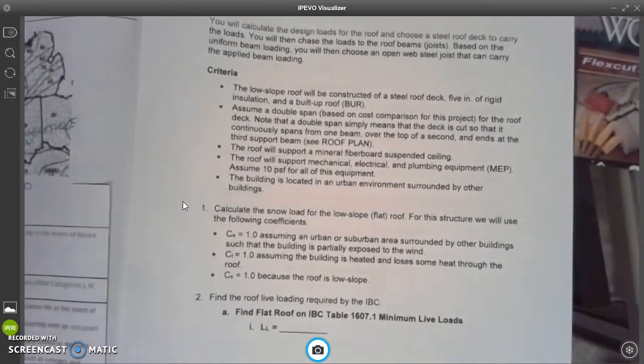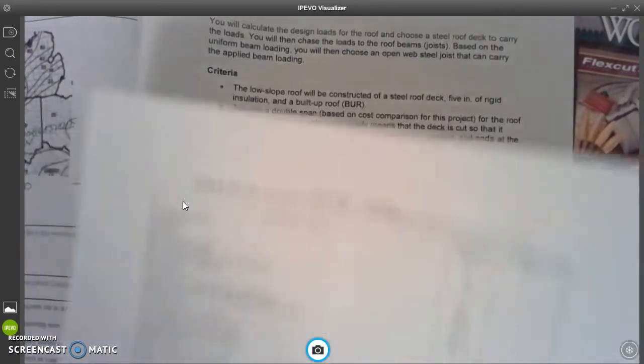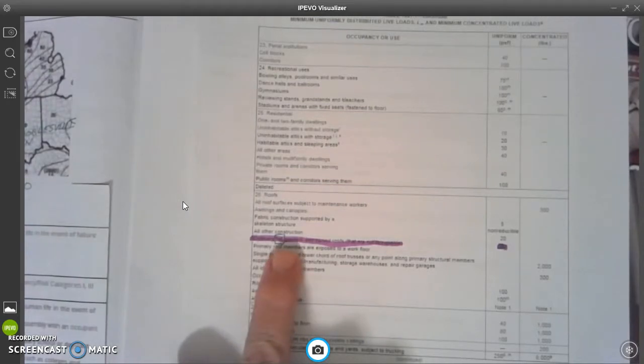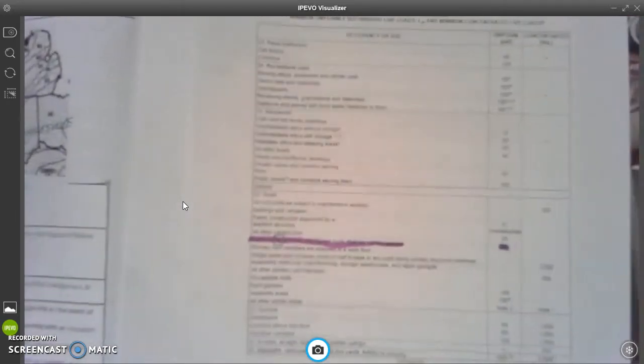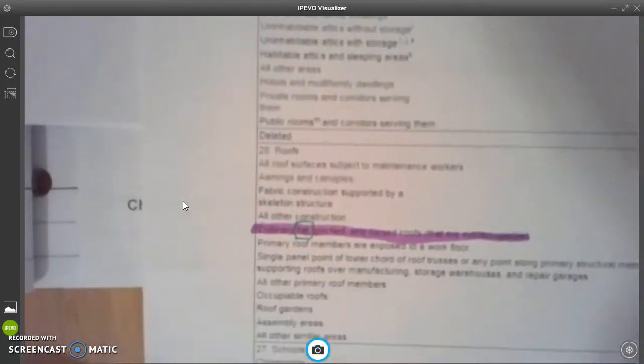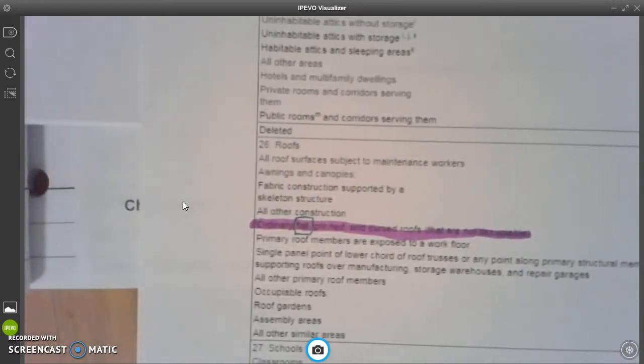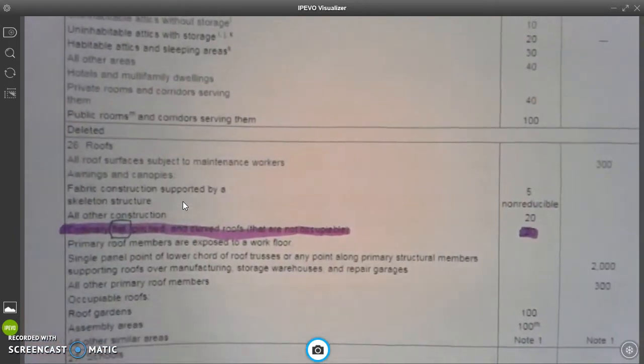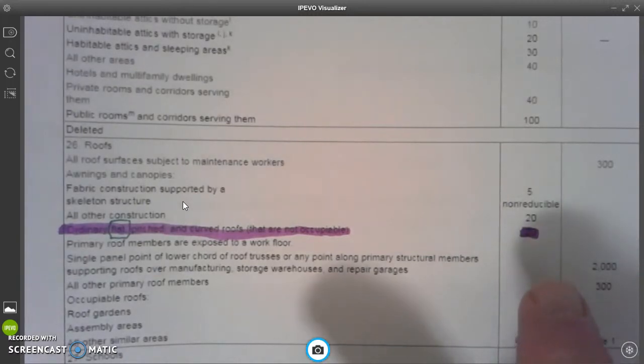And it says, find the roof live loading required by the IBC. And so letter A says, find the flat roof on the IBC Table 1607 minimum live loads. And that is right here. I know that this is impossible for you to read on this camera. See if I focus it, if that will work better. Maybe not, maybe if I bring it down you'll be able to see it. There we go. So it says that this is an ordinary flat pitched and curved roof. That's what this designation is. And when you slide it over, that value is 20. That's why I have it highlighted in purple there.